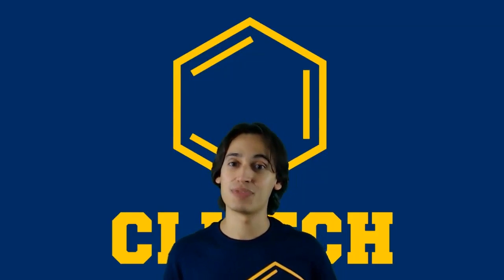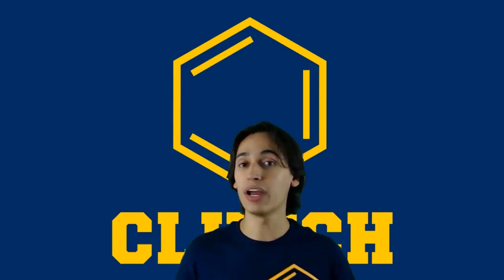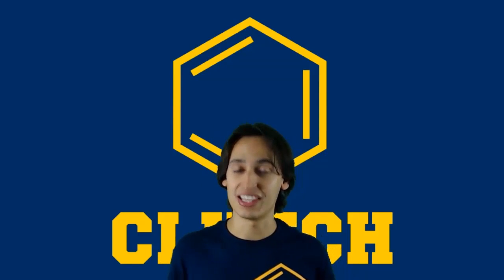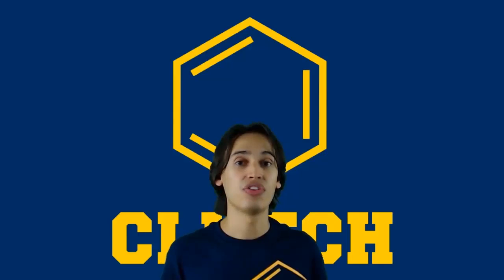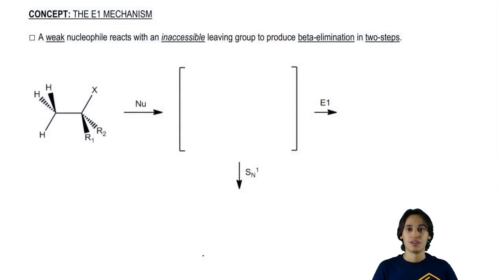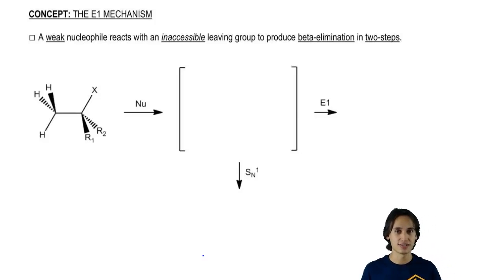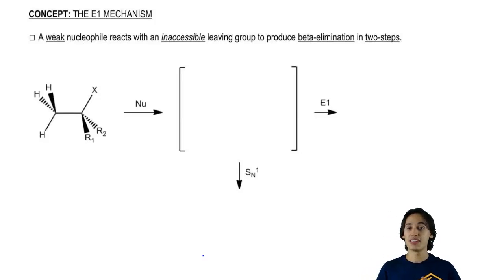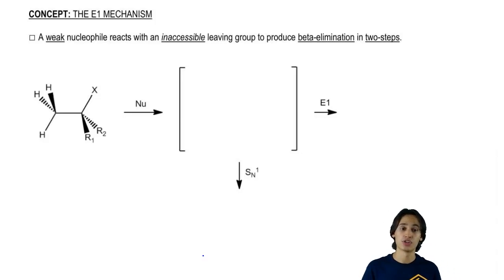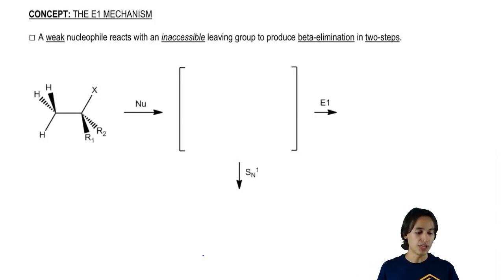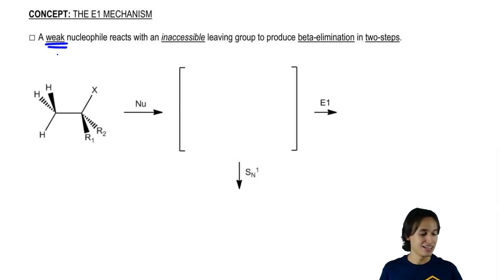Now I want to talk about a mechanism that competes directly with the SN1 mechanism, and that's called the E1 elimination mechanism. If I were to sum up the entire mechanism into one sentence, I would say this: E1 occurs when a weak nucleophile reacts with an inaccessible leaving group.